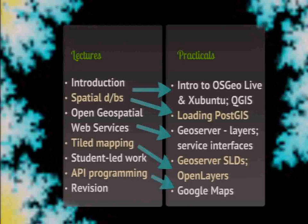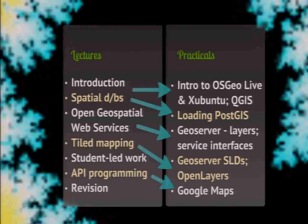They also do some API programming separately from the coursework. One aim of the MSc program is that students should see both commercial and open solutions, since that's what they'll need in the world of work. So we compare working in OpenLayers as an API with using Google Maps. That's the overall structure that OSGeo Live fits into — it's a pretty brisk pace to get through all of this.